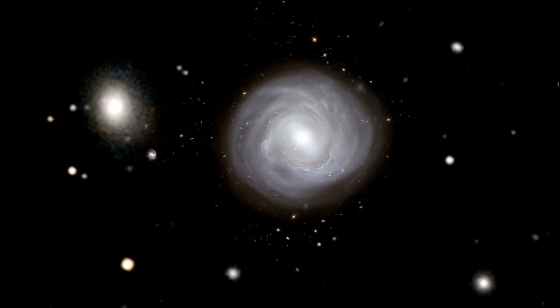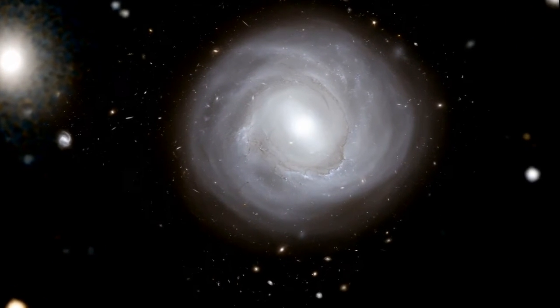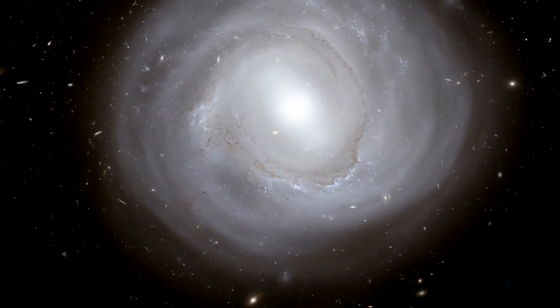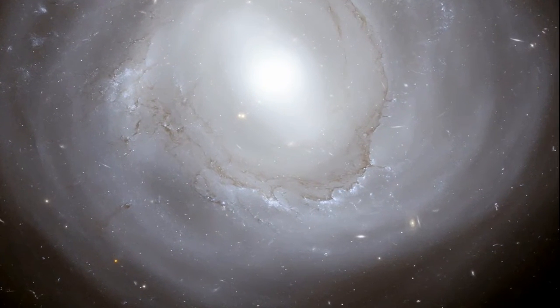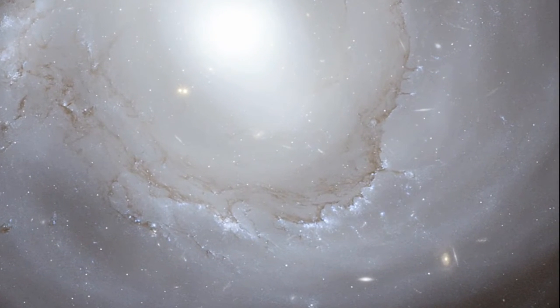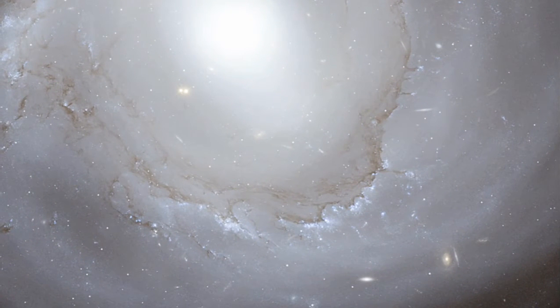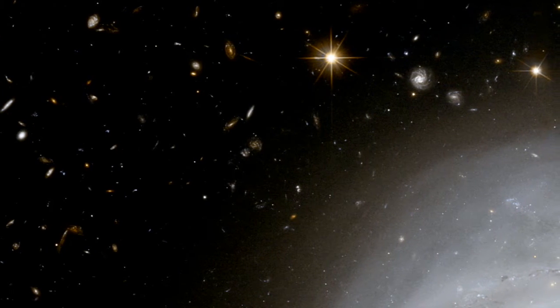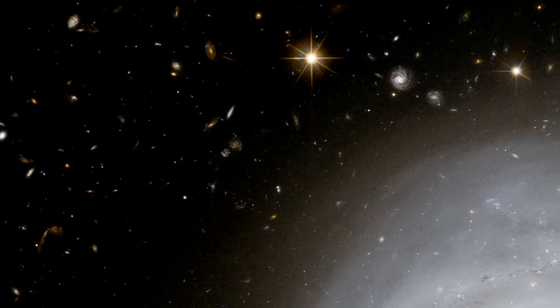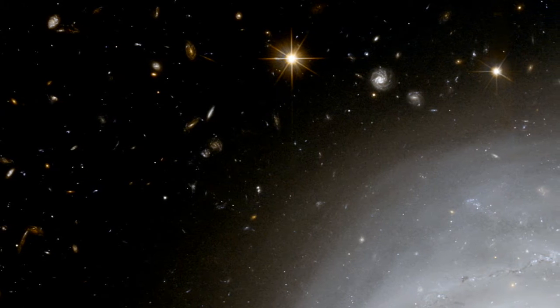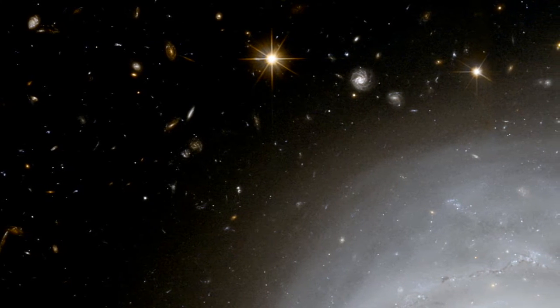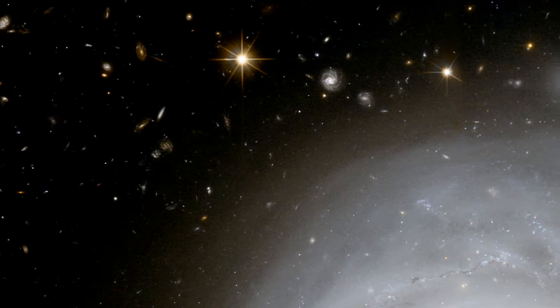Rich clusters like Coma are pretty crowded places and galaxies undergo many interactions and mergers. This constant slow activity gradually turns spiral galaxies, which are rich in dust and gas, into cleaner elliptical systems without much active star formation. As a result there are far more ellipticals and fewer spirals in the Coma cluster than are found in quieter corners of the universe.